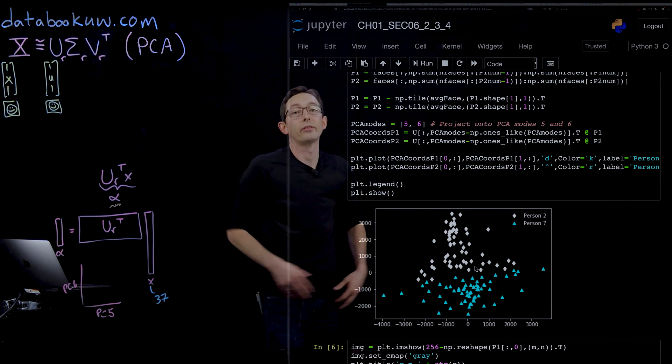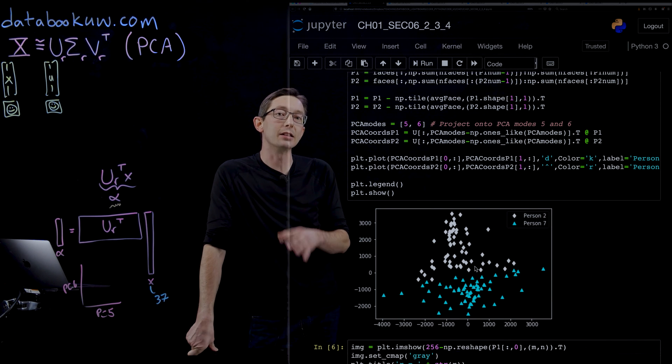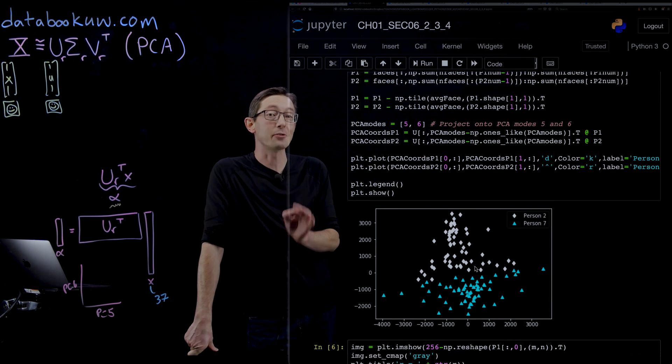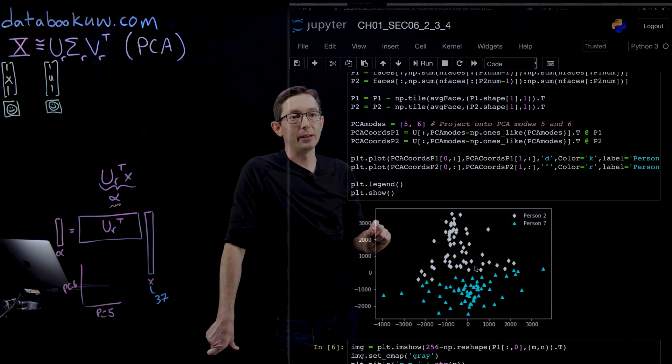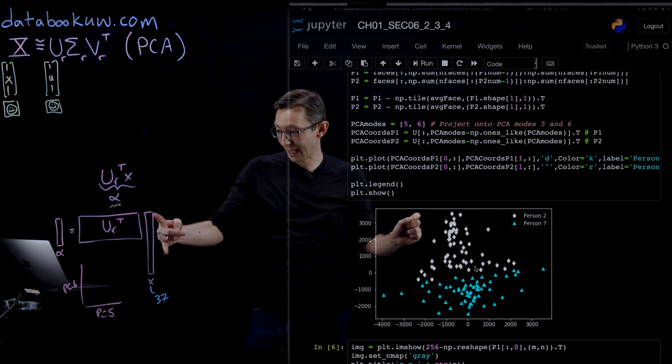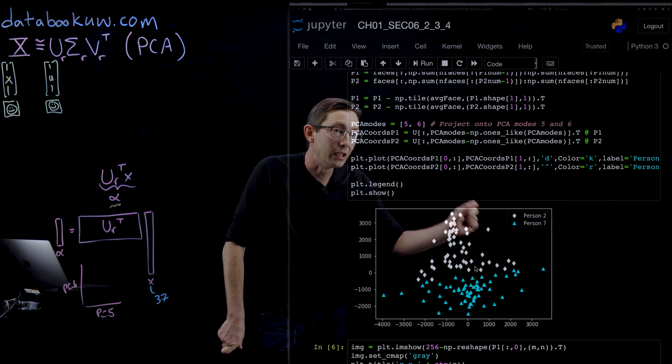Almost all of the blue triangles for person 7 are down here, and what that means is that you can build a pretty efficient and accurate classifier. So if I have a new picture of person 2, I'll be able to tell because chances are if I take that new picture and take its inner product with these principal components, it will drop near all the other white diamonds.